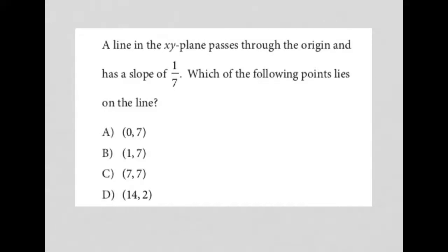So this question says a line in the XY plane passes through the origin and has a slope of 1 over 7. Which of the following points lies on the line?